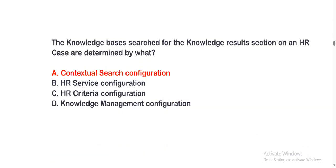Next question: The knowledge bases searched for the knowledge results section on an HR case are determined by what? The options are: option A, contextual search configuration; option B, HR service configuration; option C, HR criteria configuration; option D, knowledge management configuration. The correct option is option A.